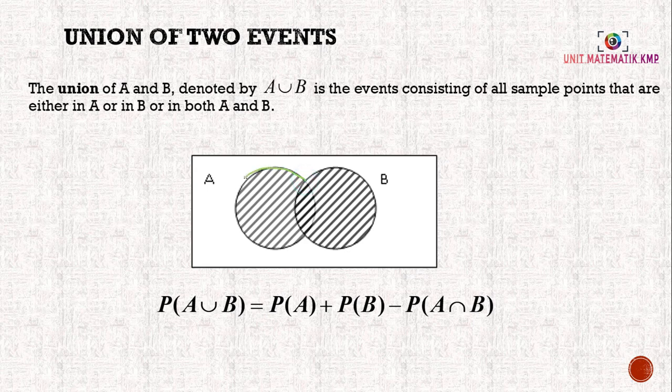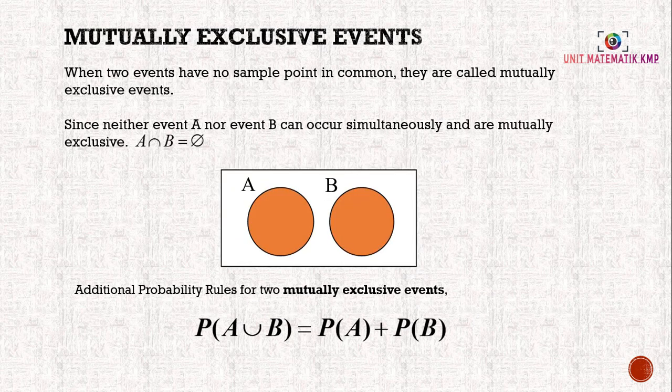So all the shaded area is A ∪ B. If we want to find the probability of A ∪ B, we will take probability of A plus probability of B minus the intersection of A and B.